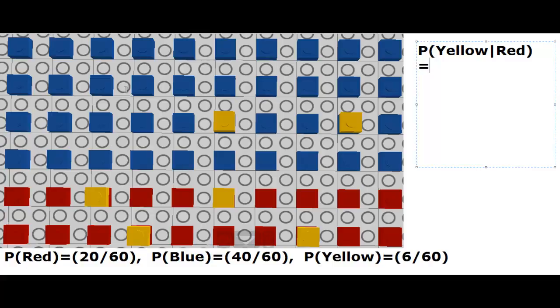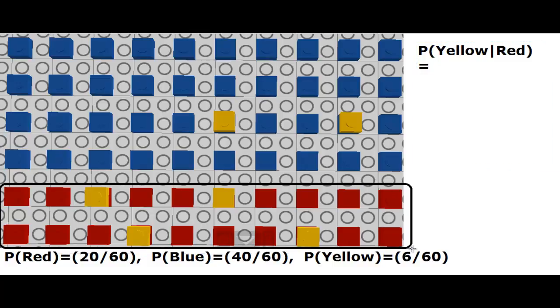So what that means is we will go ahead and now we are given that we have only red bricks. So we are going to discard these possibilities. So out of 20 red bricks, how many do we have yellow? Four of them.